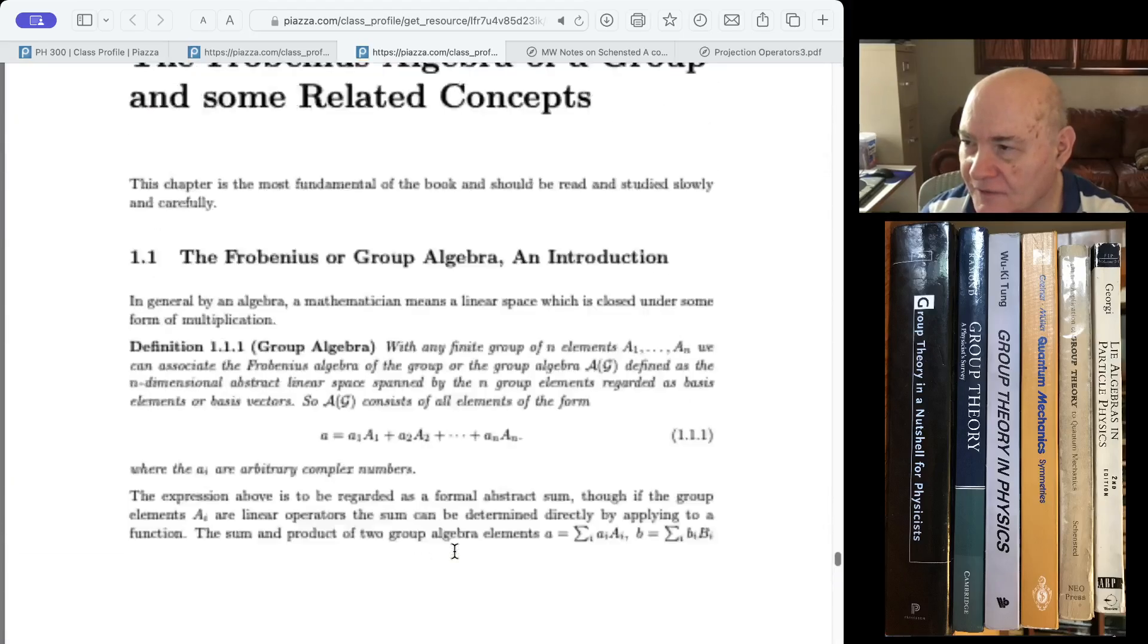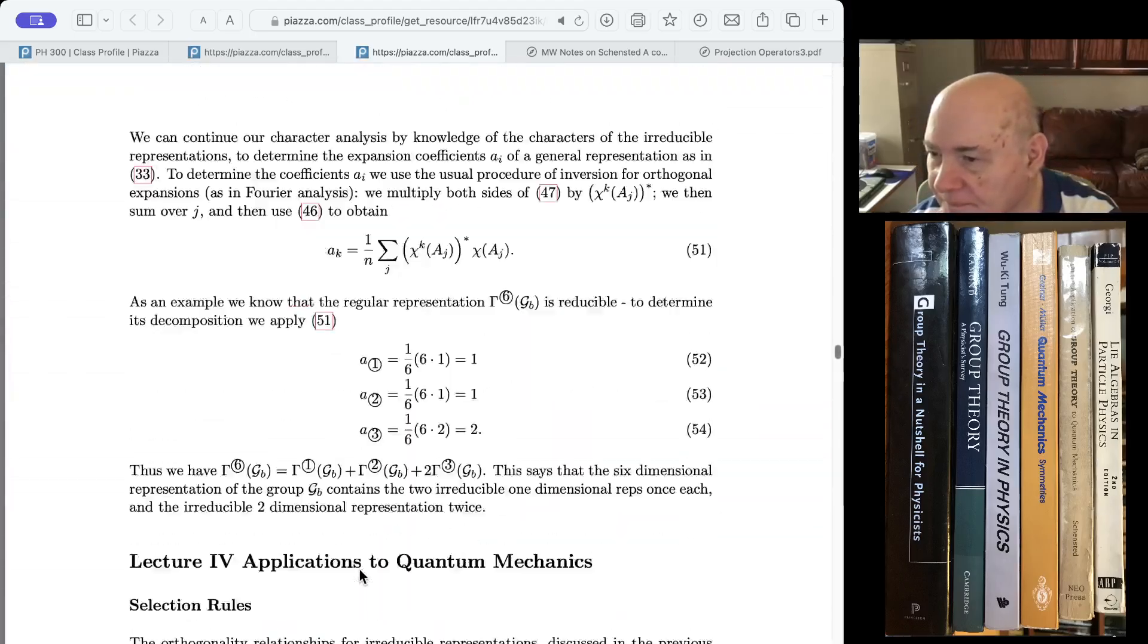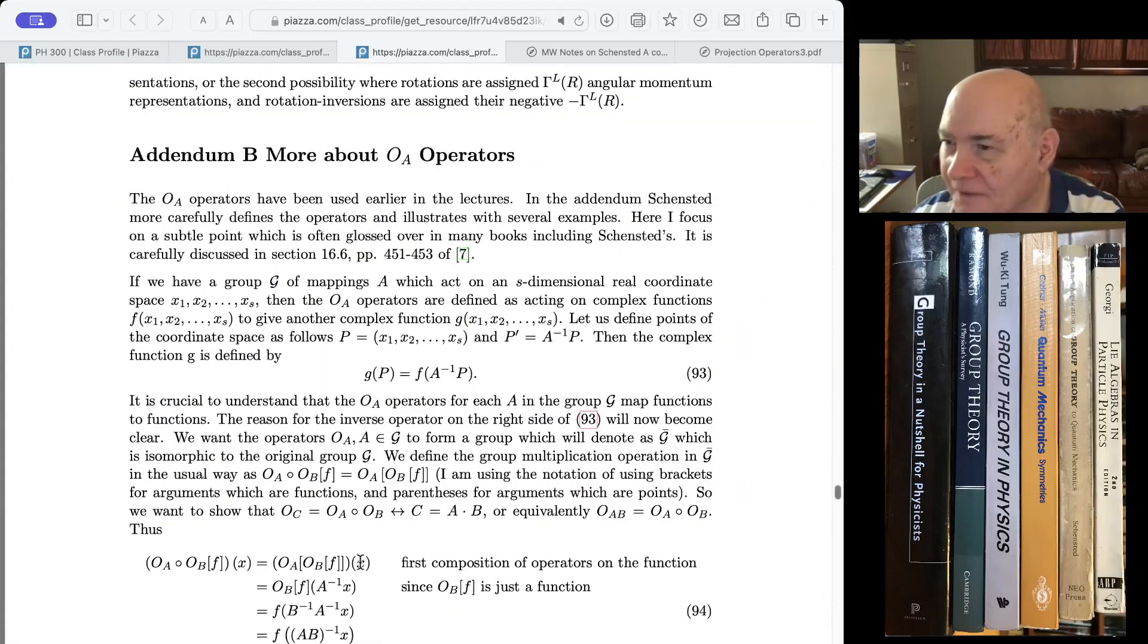So he discusses some of the confusion. And part of what I'm doing here is taken from that. Okay, so the key thing about the OA operators, as I write down here, it's crucial to understand that the OA operators act on functions. They map functions to functions. So what we want is we want an isomorphism between this OA group, which is mapping functions to functions based on elements of the group G.